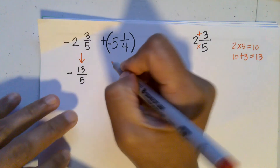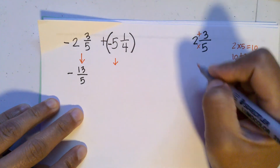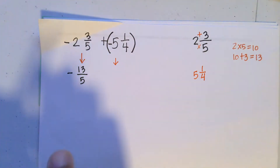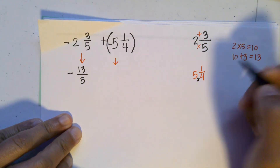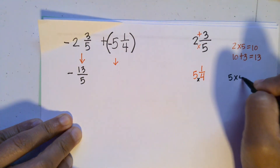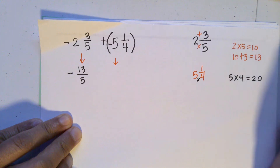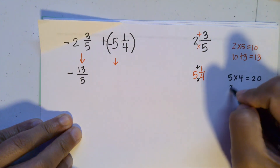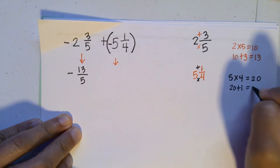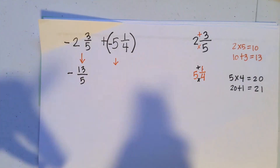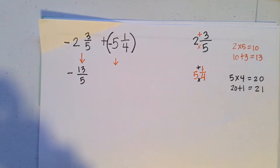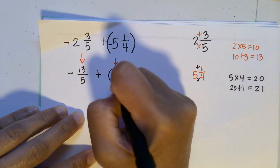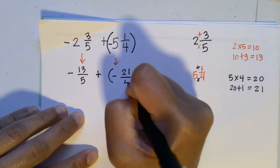For the other mixed number, five and one-fourth: we multiply five by four to get twenty, then add the numerator one, giving twenty-one. So instead of negative five and one-fourth, we use negative twenty-one over four.